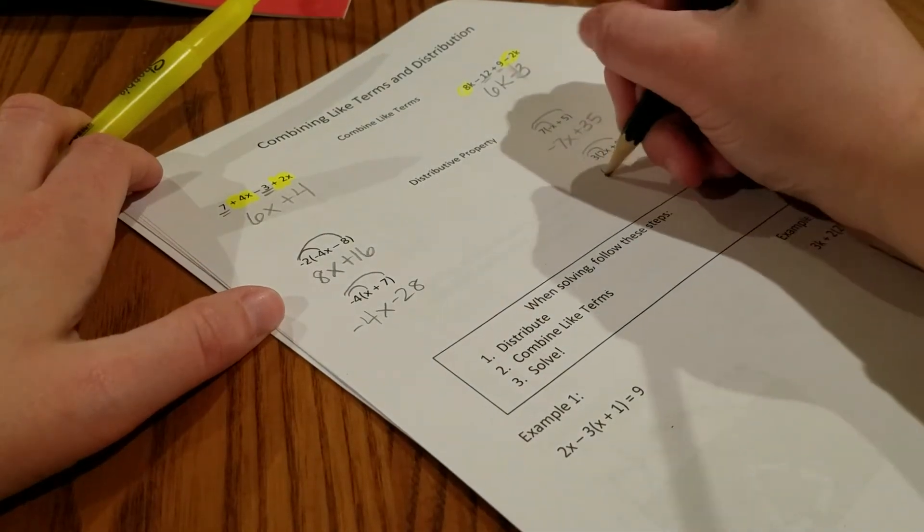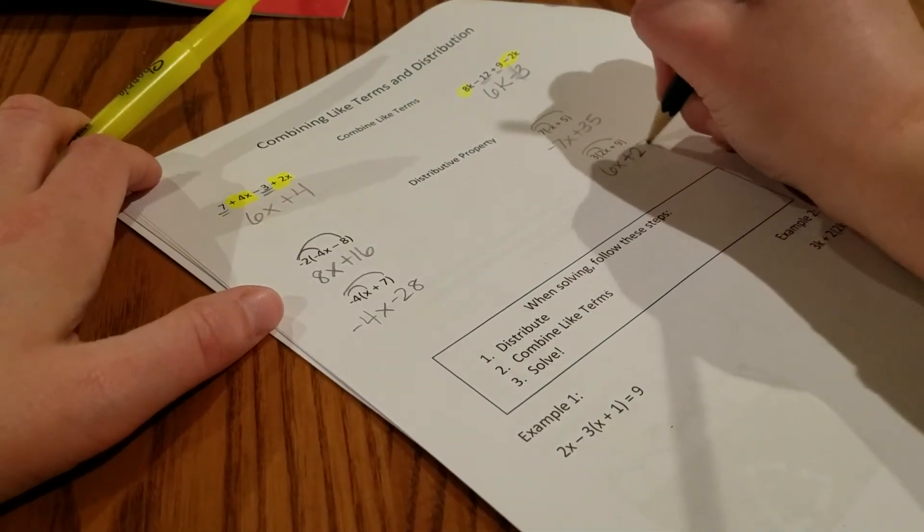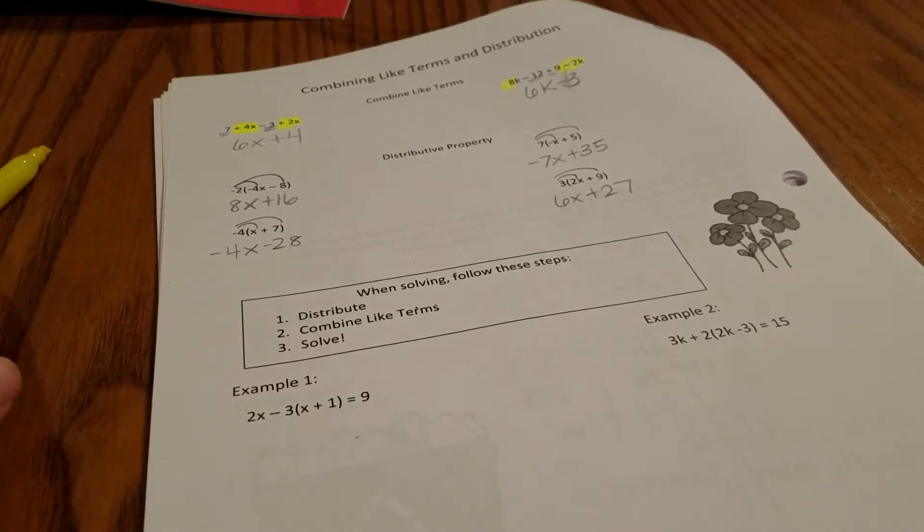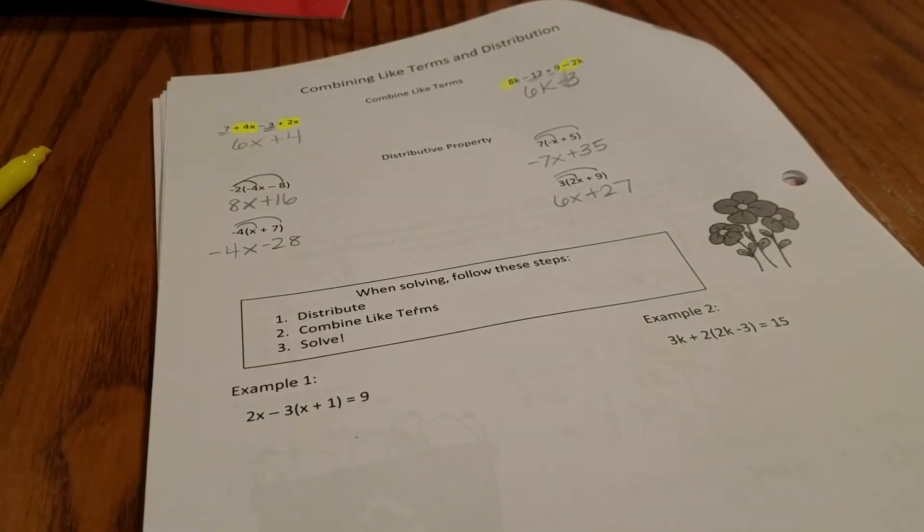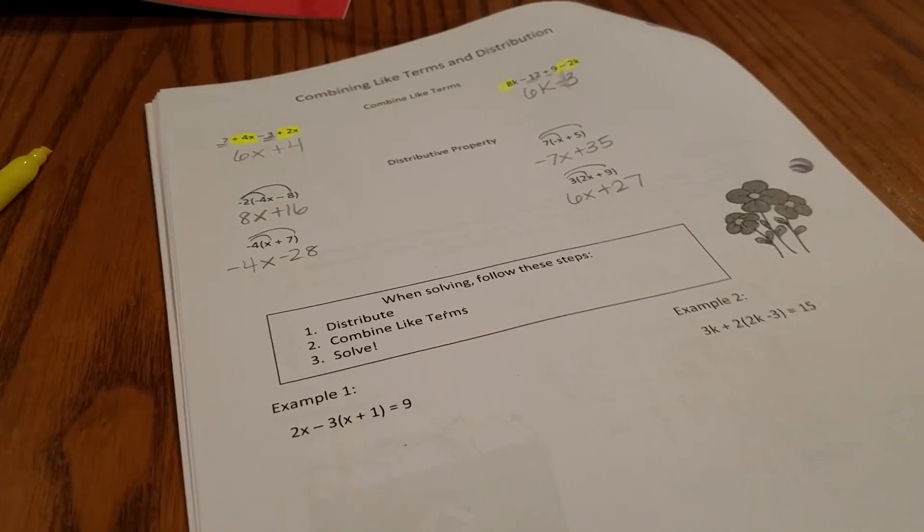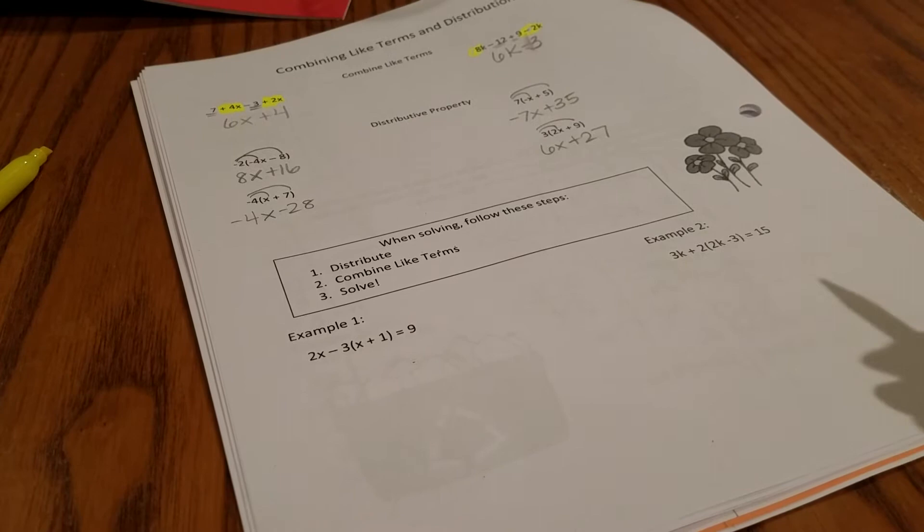Just to remind you, when you are solving these equations, distribute, combine your terms, and then solve just like normal. Basically, your goal is to get it so it looks like just a basic two-stepper.